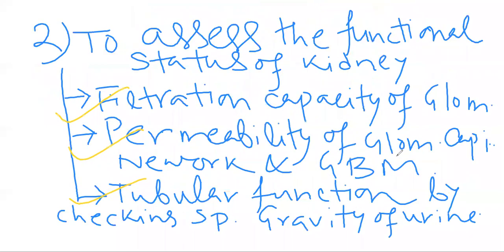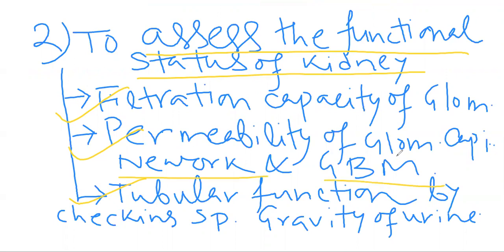In the next half we will discuss about the procedure to assess the functional status of the kidney. In this section we will discuss mainly on the filtration capacity of the glomerulus, the permeability of the glomerular capillary network and the glomerular basement membrane, and finally the tubular functional assessment by checking the specific gravity of urine. So let's start with the serum analysis.